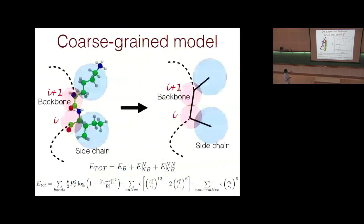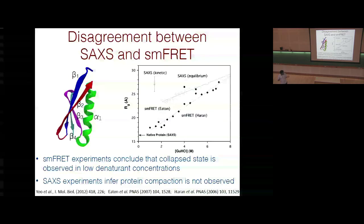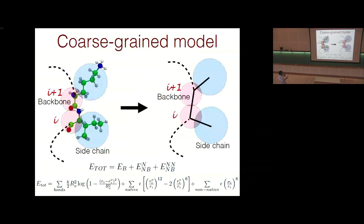The protein folding problem cannot be solved analytically, so simulation is needed. Proteins fold on a millisecond timescale, and simulating at atomistic resolution requires hardware available to only two or three groups in the world. Therefore, most researchers resort to some kind of coarse-graining to study this problem.